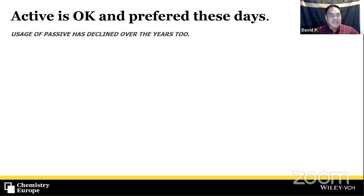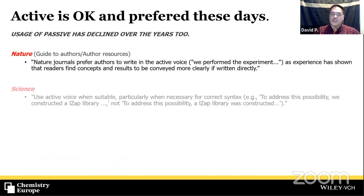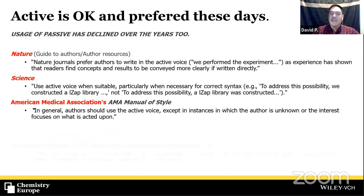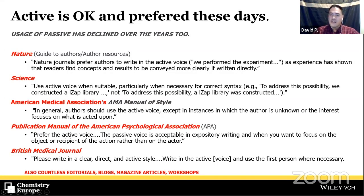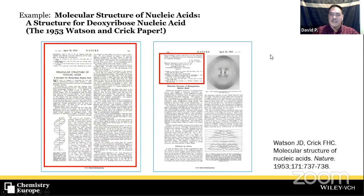The active voice is preferred these days. Major journals and styles — Science, Nature, the AMA, APA, British Medical Journal — and many editors, blogs, and workshops actually state in their notices to authors to use 'we,' particularly when describing your results and discussing them. Historically, many professors said 'this is how it was always done — distance yourself from science,' but that's not the case. Good science writing has always existed.